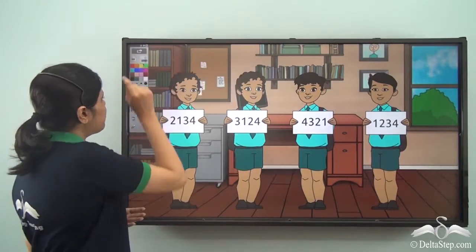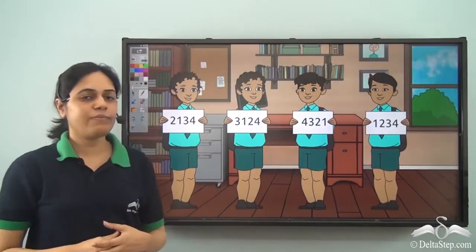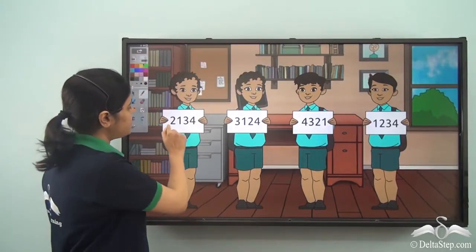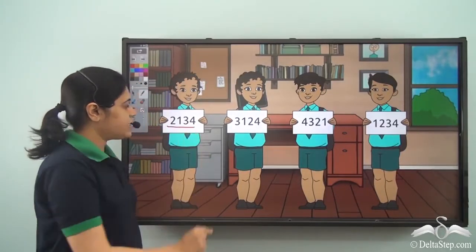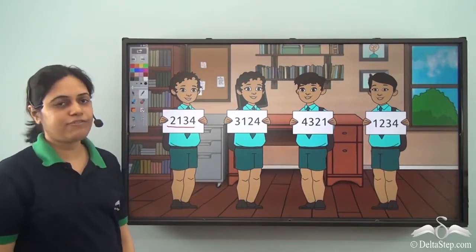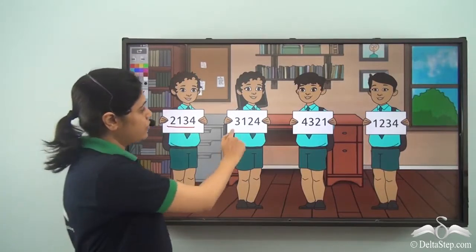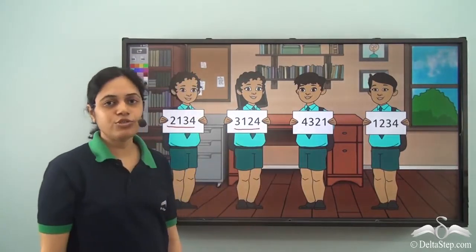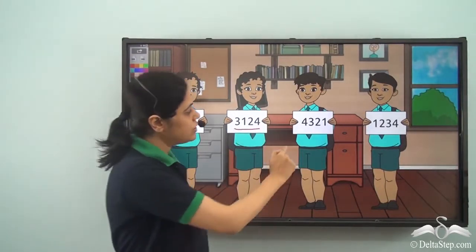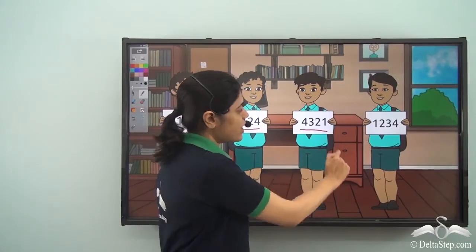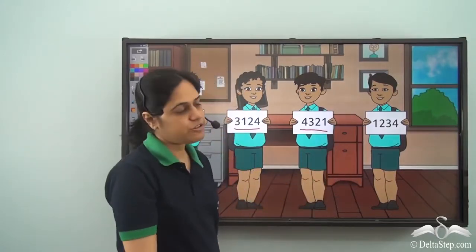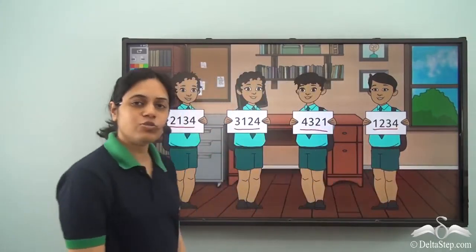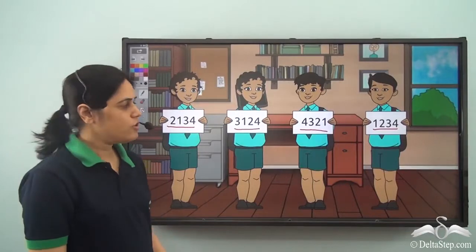Let us see what numbers they made. The first boy made 2134, the second boy made 3124, the third boy made 4321, and the fourth boy made 1234. So who do you think won the game?